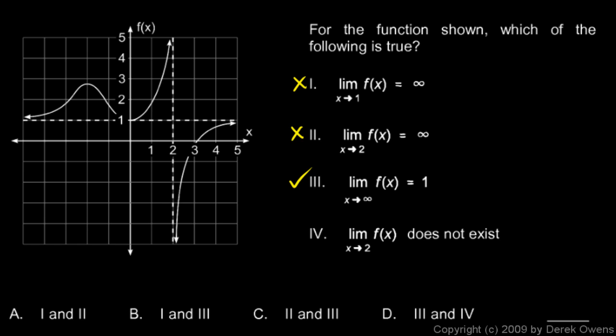And item number 4 here, the limit as x approaches 2 of f(x) does not exist. Right, when x is 2, it's positive infinity on one side, negative infinity on the other. So we can't even speak clearly in terms of infinite limits. The limit as x approaches 2 does not exist. So 3 and 4 are correct, so the answer is D.